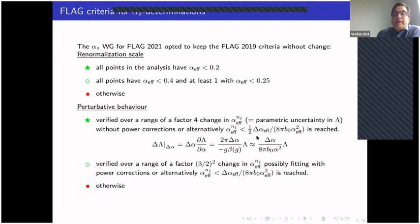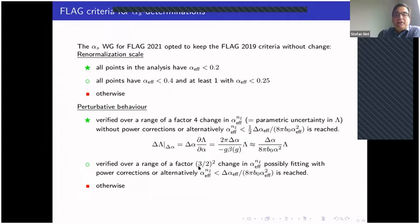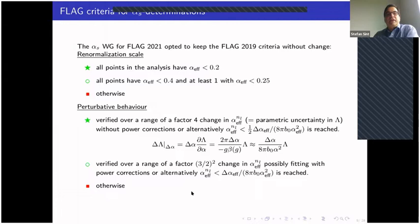Essentially, this means the systematic effect expected is still less than the statistical errors you have in your observable. These criteria do not actually refer anywhere to the lattice — they could also be applied to any other determination in phenomenology. The specific lattice criterion is about the continuum limit.